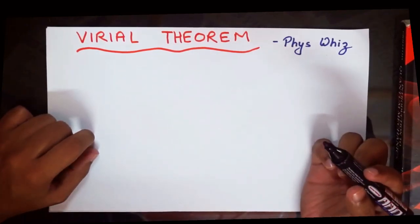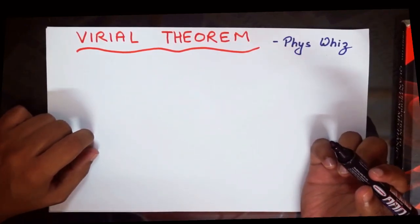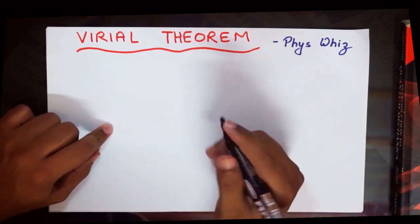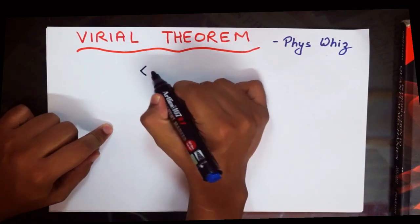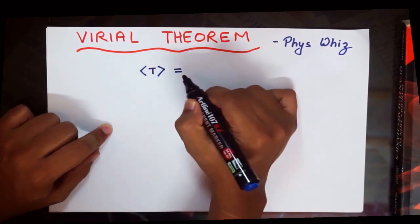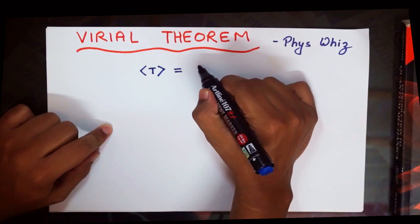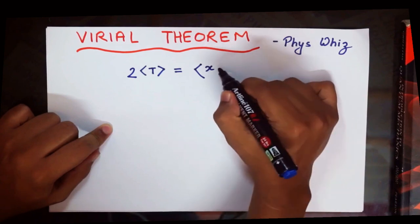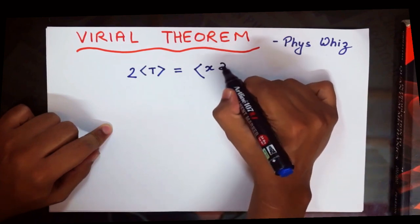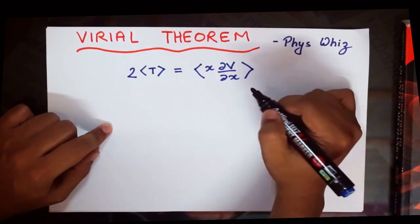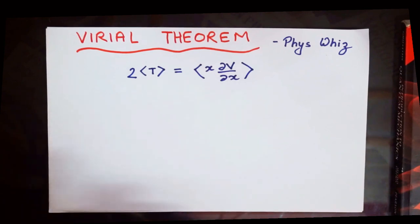Hey guys, welcome to another tutorial on quantum mechanics. In this tutorial I'm going to show you how to derive the Virial theorem of quantum mechanics. The Virial theorem basically provides a relationship between the expectation value of the kinetic energy and the potential energy — specifically, twice the expectation value of kinetic energy equals the expectation value of x multiplied by del V by del x, where V is the potential energy. This is what we will be deriving.